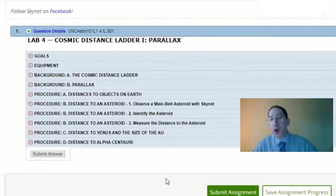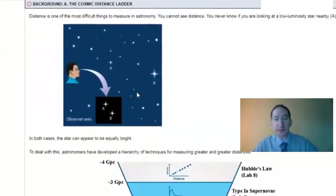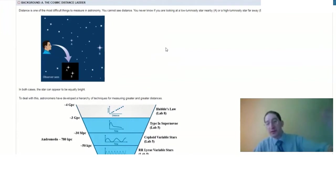In this video I'm going to overview the two background sections of Lab 4. The first is on the cosmic distance ladder. Measuring distances farther and farther out is the primary theme of the rest of this lab sequence.